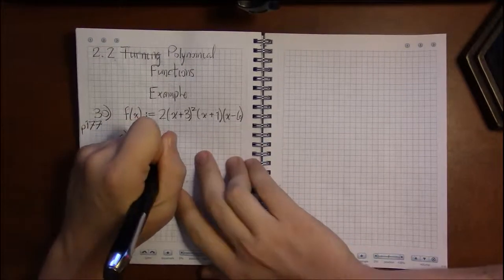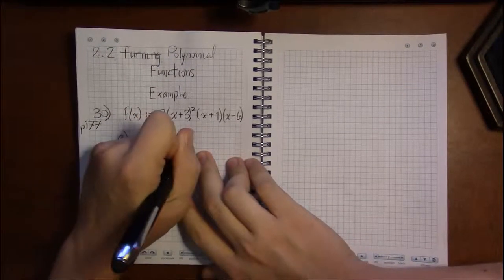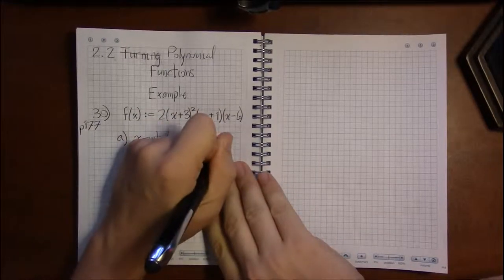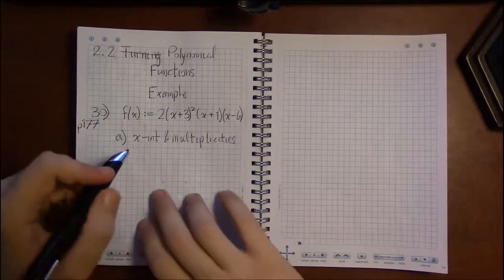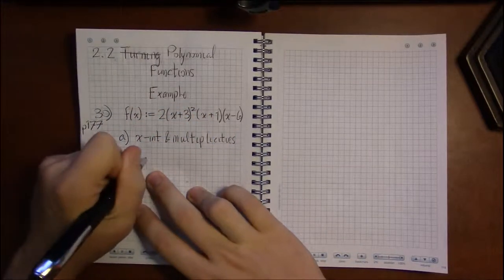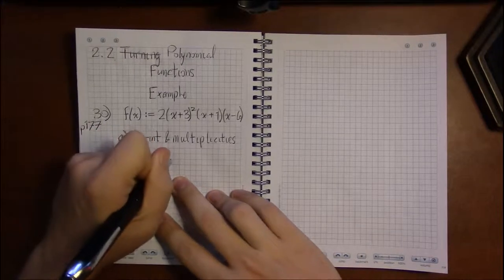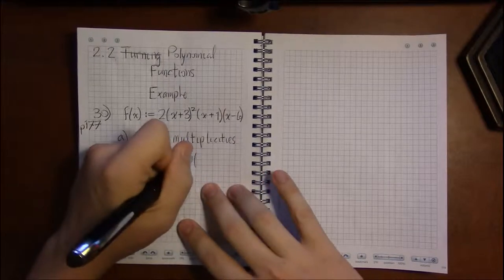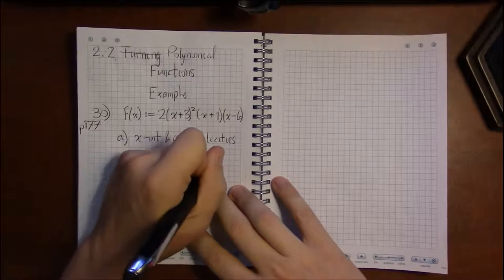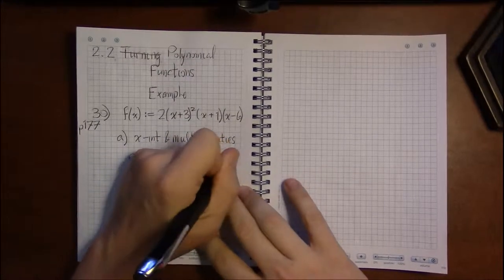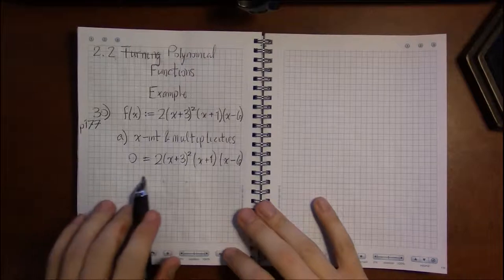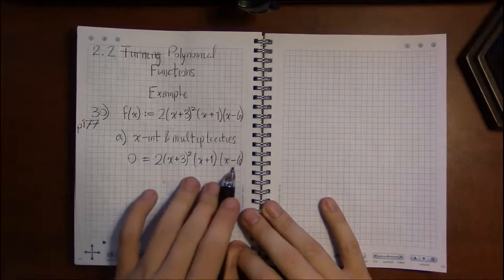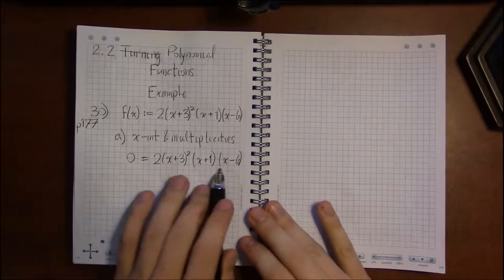So we need the x-intercepts and their multiplicities. To find x-intercepts, we set y, or f(x), equal to 0, and solve for x. In this case, we've got a product of a bunch of things being 0. So this means that one of these things has got to be 0. Well, it's obviously not 2. 2 isn't equal to 0.